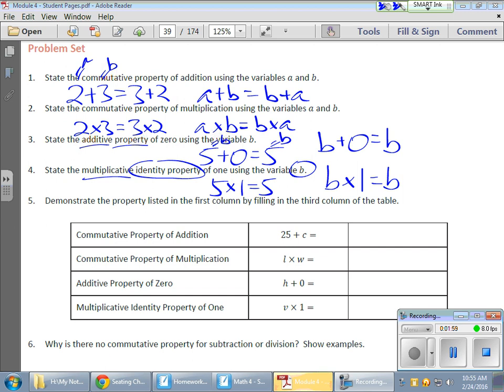And then they give me a nice little chart here about things to fill in. I want a commutative property of addition, which means the order does not change. So if I'm adding c to 25, that's the same as taking c and adding 25.